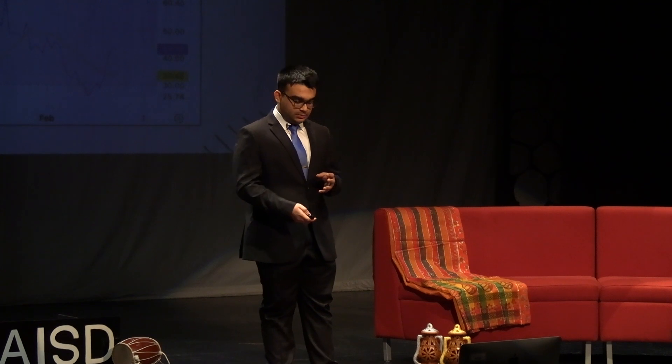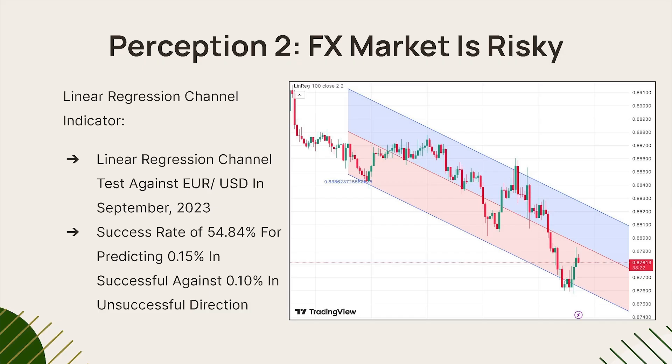The third indicator I tested was the linear regression indicator, which uses mathematical concepts typically taught in ninth or tenth grade. You need to understand the slope of the line, the upper blue line, and the lower red line. When the slope is negative and the Forex pair is touching the uppermost blue line, that's a sell signal. When the slope is positive and the Forex pair is touching the lowermost red line, that's a buy signal. Tested against EUR/USD for September 2023, it had an efficacy of around 54.84%.